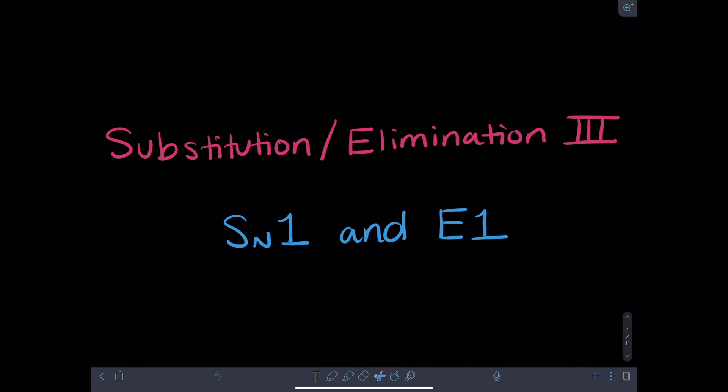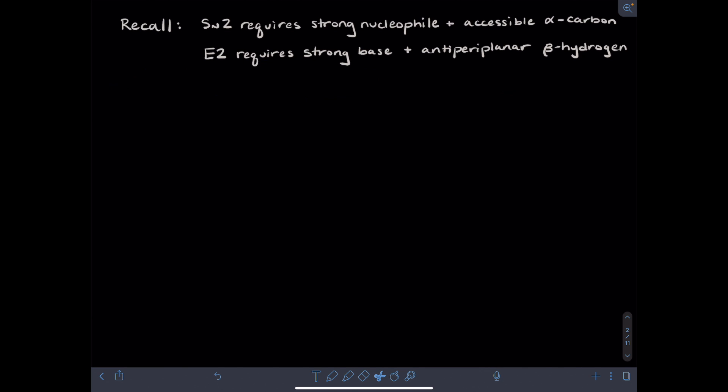Hi folks! The following video is going to discuss new types of substitution and elimination mechanisms known as SN1 and E1. Recall that SN2 reactions require a strong nucleophile and an accessible alpha carbon of your alkyl halide. Also recall that E2 elimination mechanisms require a strong base, and the beta hydrogen needs to adopt an anti-periplanar orientation relative to the leaving group. Today's video will consider what happens if you have a weak base and/or a weak nucleophile instead of a strong one.